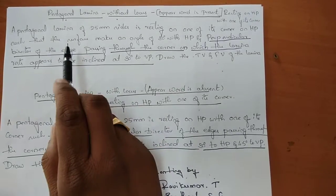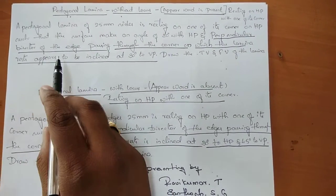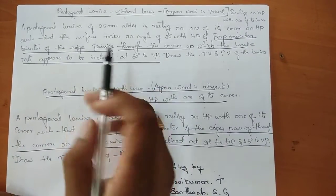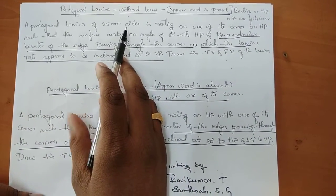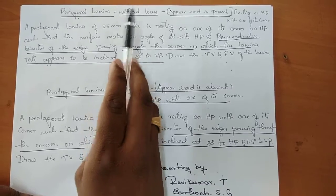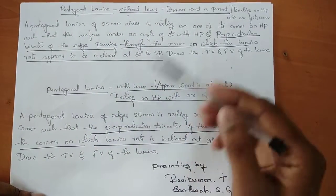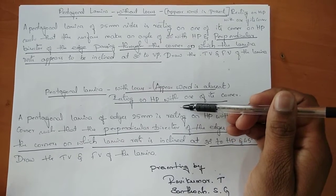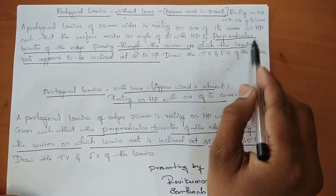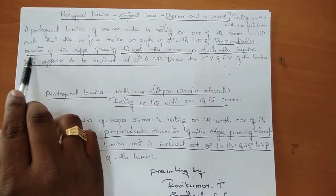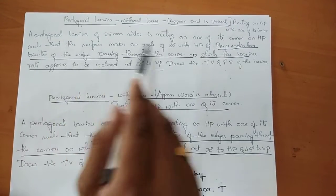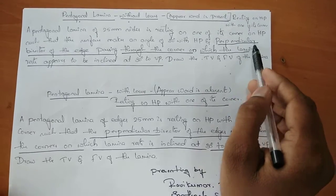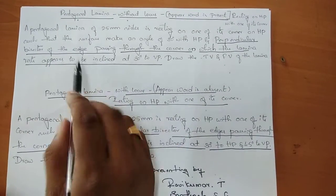Good morning, my name is Ravik Kumar and my colleagues Santosh and Vinay Kumar. With the help of these two guys, I'm doing a video on pentagonal lamina. Today I'm explaining about the pentagonal lamina — with locus and without locus. The key word is 'perpendicular bisector.' If the word 'perpendicular bisector of the edge passing through the corner' is present, then it is a locus problem.